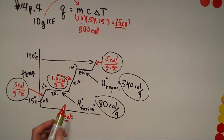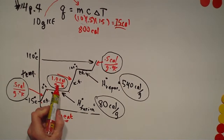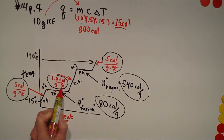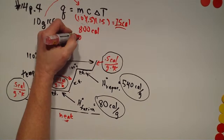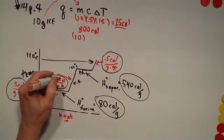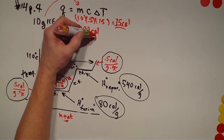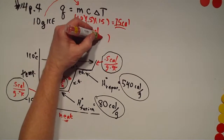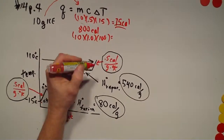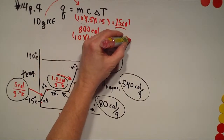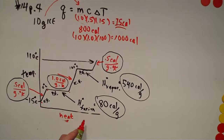Then we calculate from 0 to 100°C. That's the standard specific heat capacity of water — 1 calorie per gram per degree Kelvin. We put it back into the formula: 10 grams × 1.0 cal/g·°C × 100 degrees Celsius. So we're going to have to add 1000 calories to get the water from 0 to 100 degrees C.